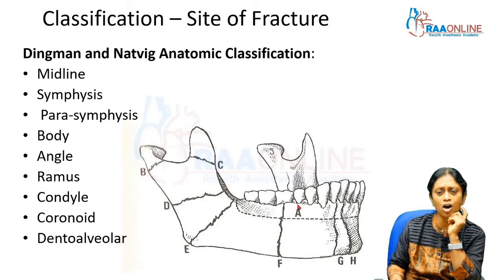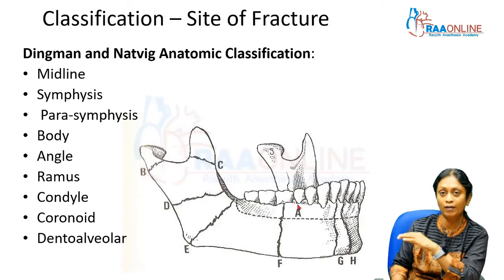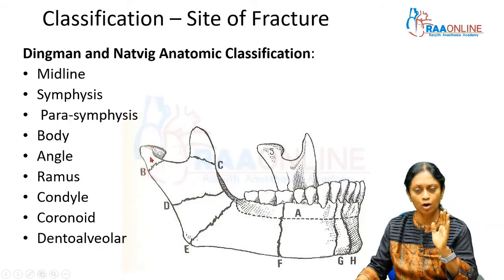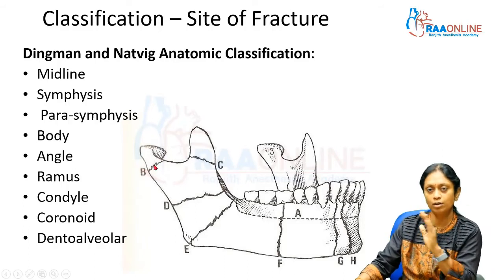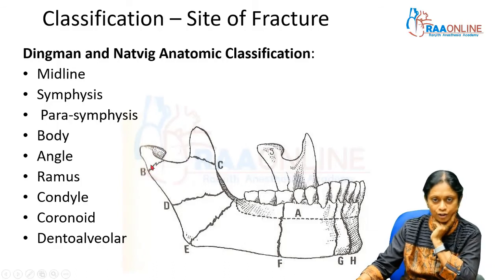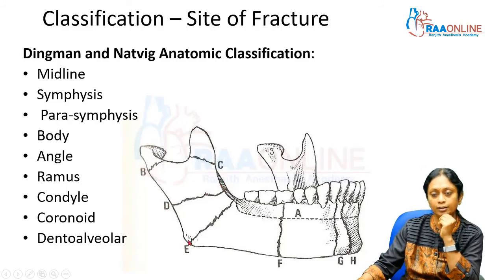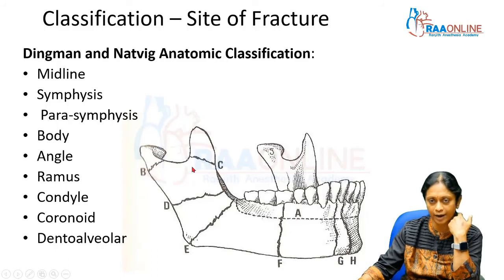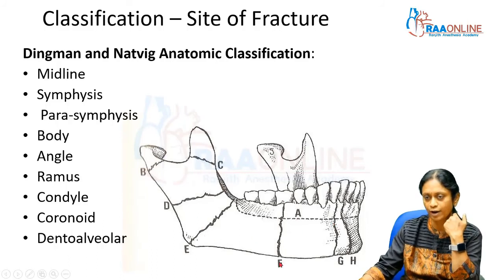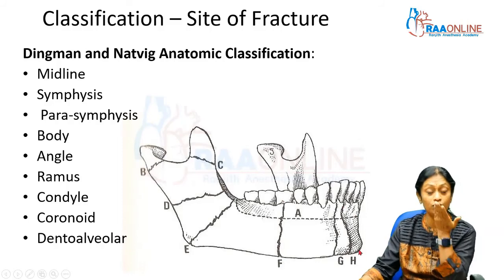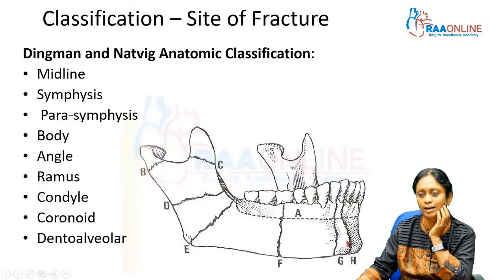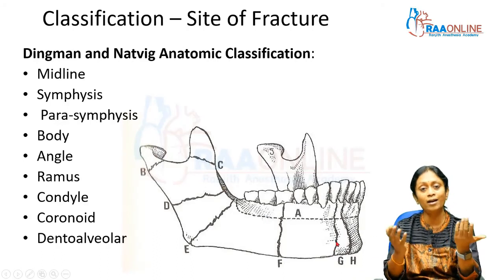Mandible fractures can be classified based on type, site, and cause. Dingman and Natvig classified them based on the anatomy of the mandible. We have the condyle — condylar fractures are a large topic covered separately. Then the coronoid process, the ramus with a horizontal ramus fracture, the angle for mandibular angle fractures, and the body of the mandible. In the central region, it is called a symphysis fracture; on the lateral aspect of the symphysis, it is a parasymphysis fracture.